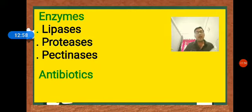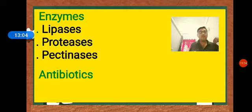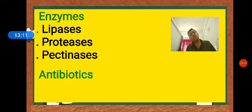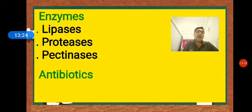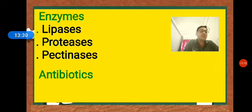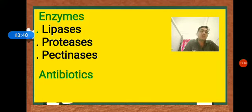Finally, antibiotics are chemical substances produced by certain microbes that kill or inhibit the growth of other microbes. The word 'antibiotic' is derived from two Greek words: anti means against, bio means life. The term antibiotic was coined by Selman Waksman in 1942. Antibiotics are very beneficial for human beings.